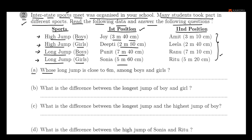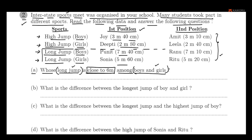The question is: who has a long jump close to 6 meters among boys and girls? Looking at the long jump values, 5 meters and 60 centimeters is closest to 6 meters. The answer is Sonya, whose long jump is 5 meters and 60 centimeters.